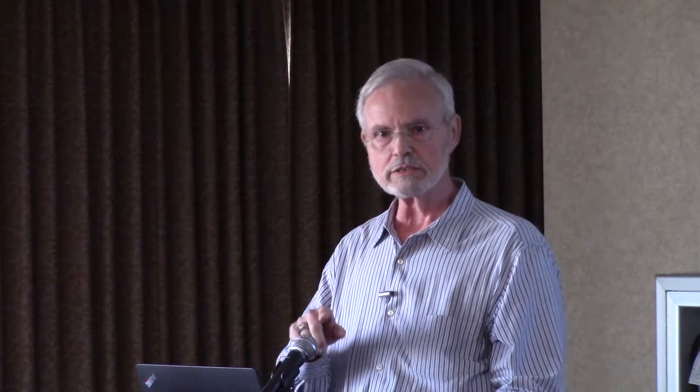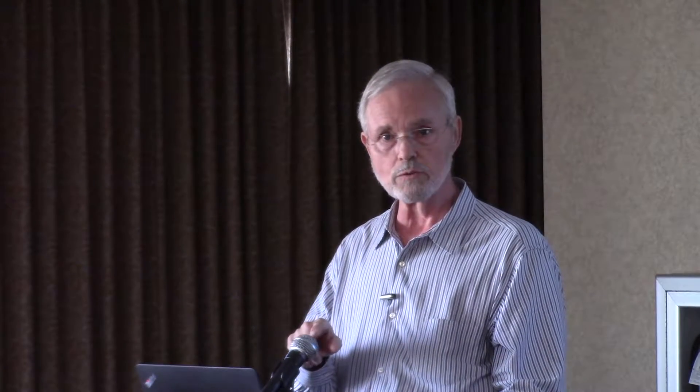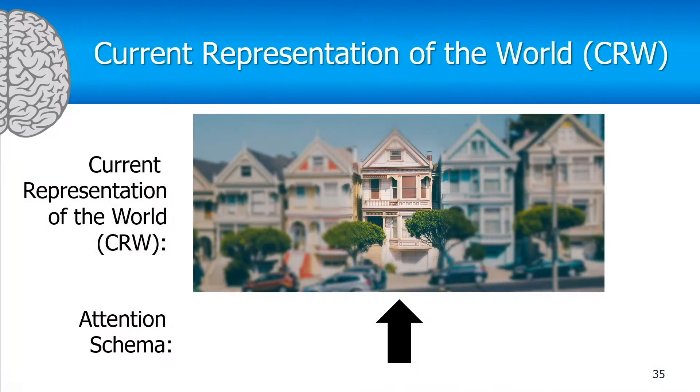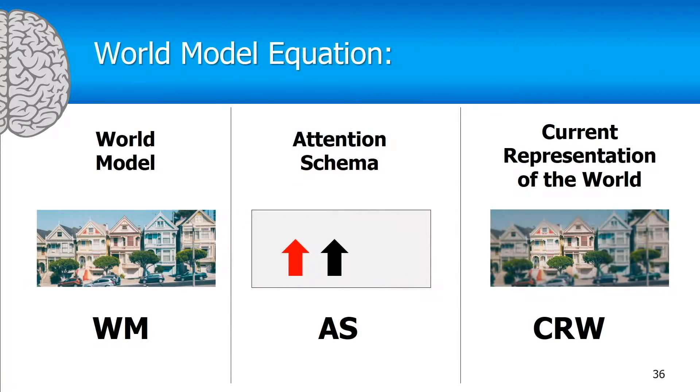The experiencer is modifying that internal model of the world by directing attention. This is where the experiencer has a self-model — it has a self-model within this internal model of the world, the current representation of the world. And it's the attention schema which is the model of the experiencer. So we have three objects: the world model, the attention schema, and the current representation of the world.